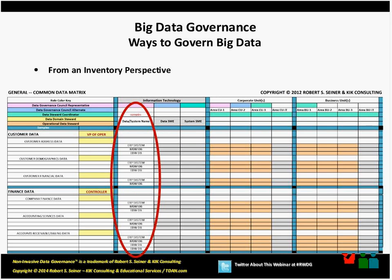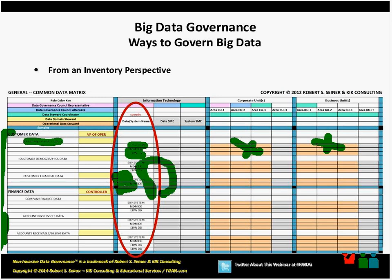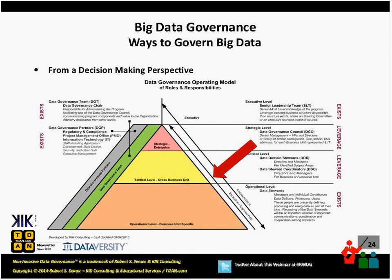From an inventory perspective, the common data matrix is a way to identify by subject area what different types of data we have in our organization and who uses that data. We need to identify for each subject area what systems that data resides in and who in the different parts of the organization makes use of it. As we inventory the data, we need to add the fact that big data is another place we can find customer data, finance data, supplier, or vendor data. It makes sense organizationally to know where all data is located and to identify who has accountability for that data — whether informal or formalized — which comes into play when we put our governance program in place.